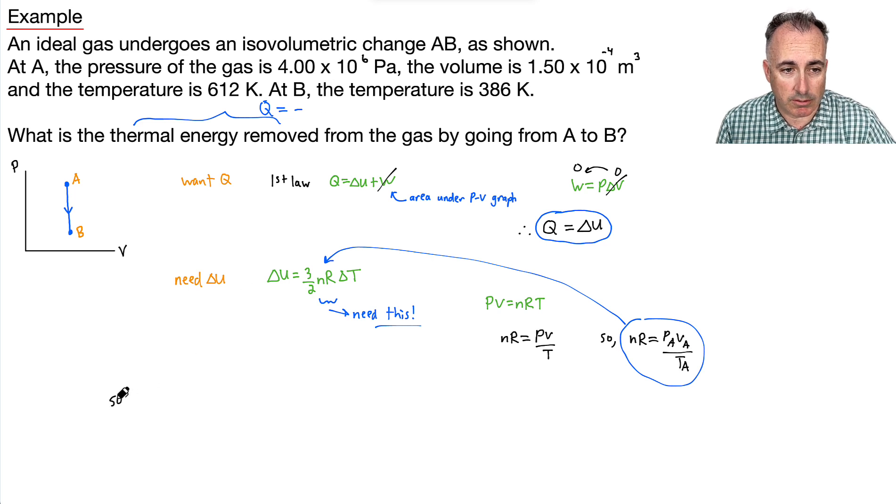Now, we can say delta U is going to be equal to, and remember, delta U, the whole point of doing this is to find out Q actually. So Q, which equals delta U, which is going to be equal to 3 halves, and I'll just write everything down. Instead of NR, what do I put in? I put in PA VA over TA. And then I have to do the change in temperature. So the change in temperature is going to be the temperature at B minus the temperature at A.